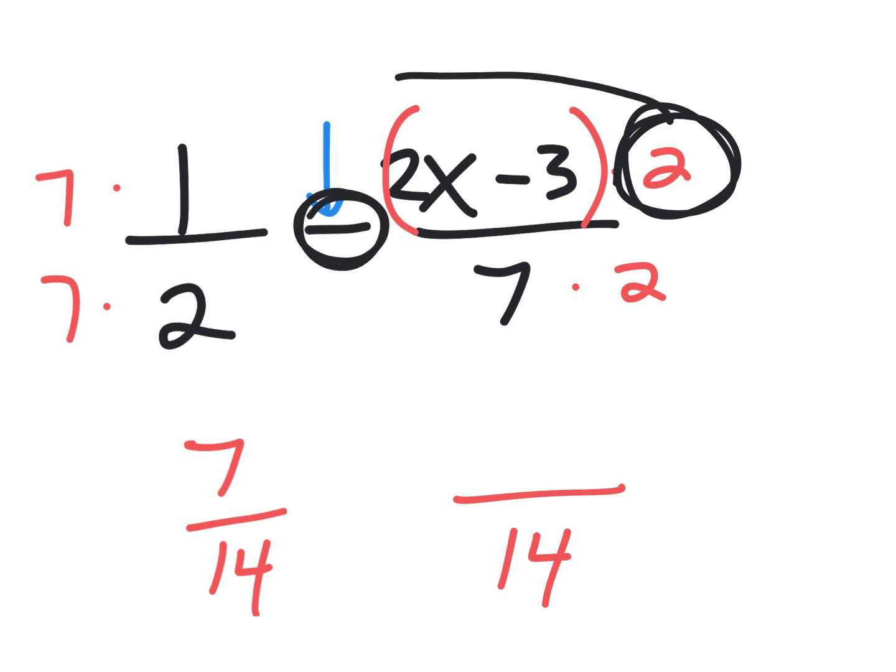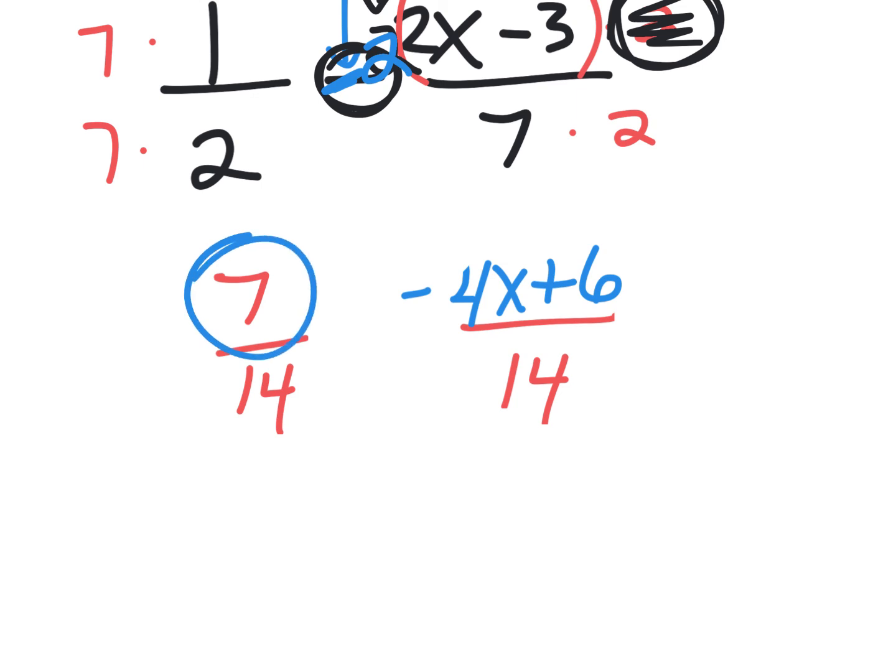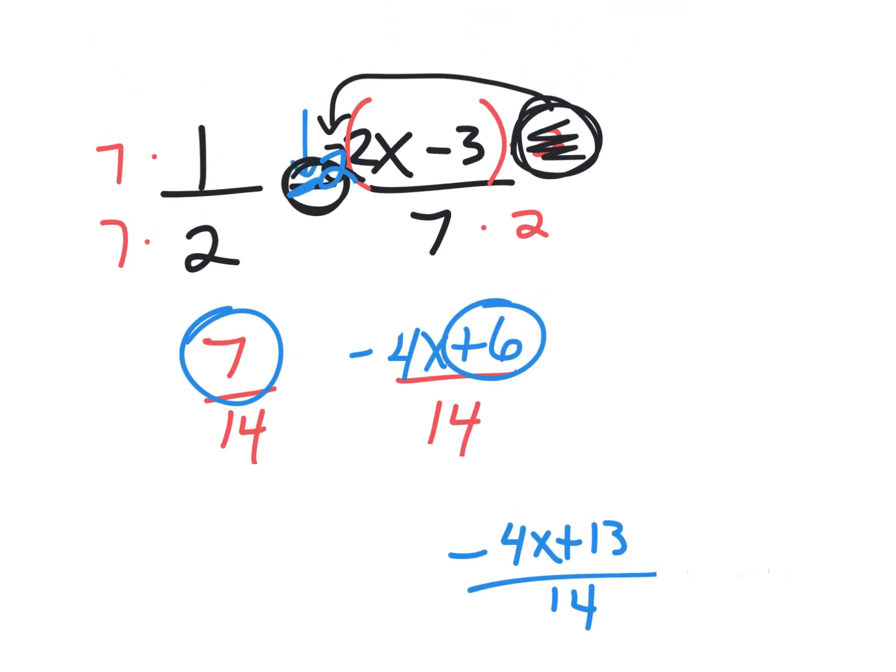And then it would be like a negative two, negative two times both of those things. So it's going to be negative four. That's a weird looking four. Negative four X plus six. And then if I put this seven with this six, that'll make 13. Negative four X plus 13 all over 14. Now process that for a minute. I know some of you thought it was negative six. It's not because this negative will distribute to this negative. And you can see how a lot of kids are going to get that wrong. All right.